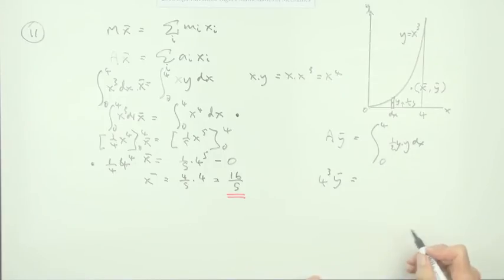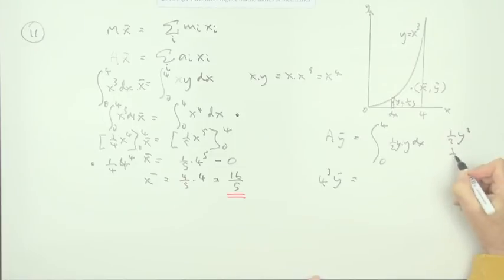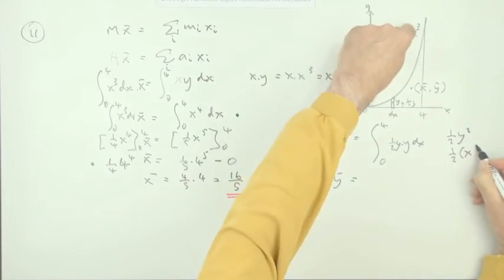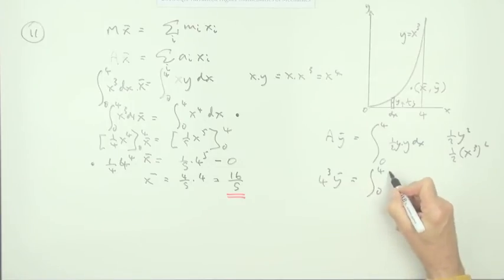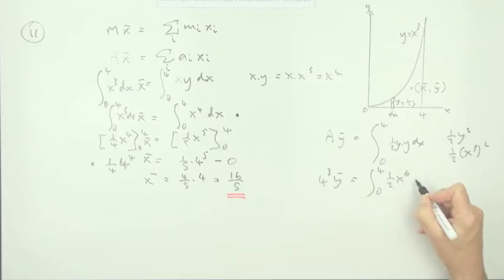Well, a half y squared will be a half of x cubed squared. So that's a half of x to the 6. So it's integral from 0 to 4 of a half x to the 6 dx.